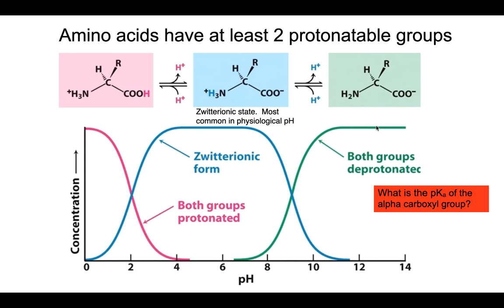Here's some homework: using only this information — eyeballing this data — I want you to determine what is the pKa of the alpha-carboxyl group and the alpha-amino group. There's a very specific way to solve this, and I want you to work on that.